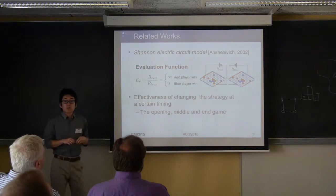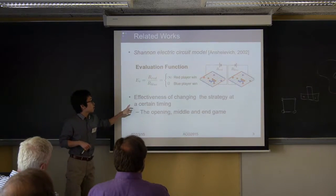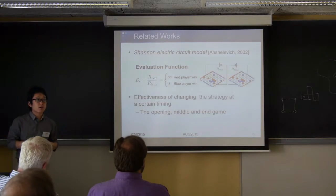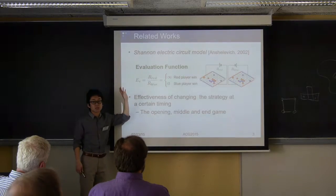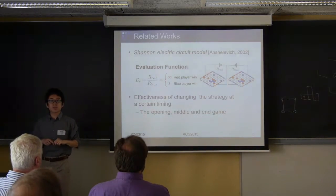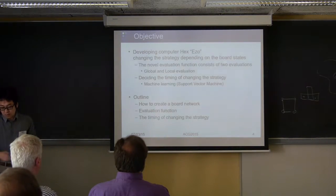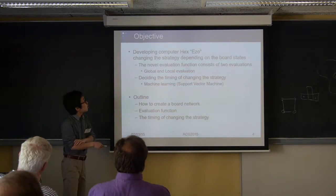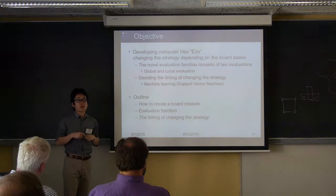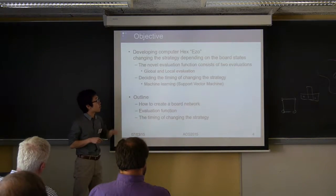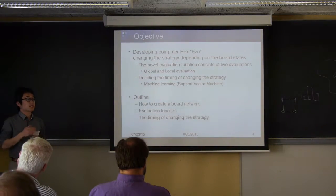It is an effective and popular method to change strategy at a certain timing in the game, and we think it is effective in hex. However, the resistance function is difficult to use for changing strategy because it consists of only one element. The objective of our study is to propose a novel evaluation function consisting of two elements — global and local variations — and to change the strategy depending on board states using machine learning.